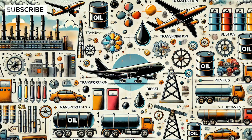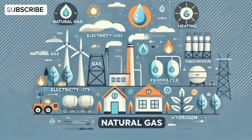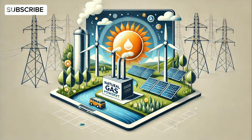Both oil and natural gas have unique applications. Oil is primarily used in transportation as gasoline and diesel, and is also a feedstock for plastics, chemicals, and lubricants. Natural gas, on the other hand, is a cleaner burning fuel used for electricity generation, heating, and as a feedstock for fertilizers and hydrogen production. Interestingly, natural gas is also pivotal in renewable energy systems, serving as a backup for solar and wind energy.